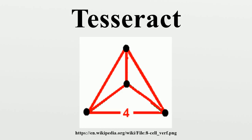The tesseract is one of the six convex regular four-polytopes. The tesseract is also called an eight-cell, c8, octachoron, octahedroid, cubic prism, and tetracube.